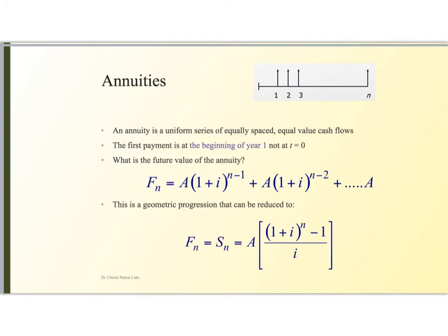So let's talk next about annuities. An annuity is a uniform series of equally spaced equal value cash flows like we talked about those car payments in the previous slides.